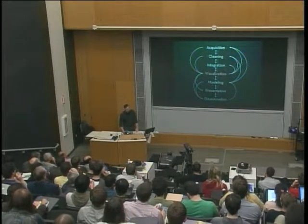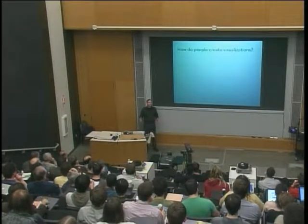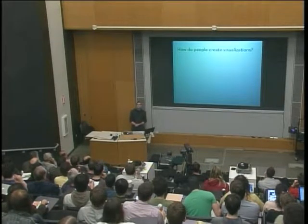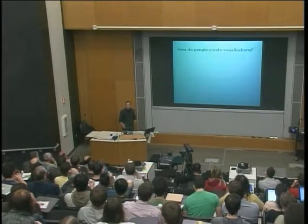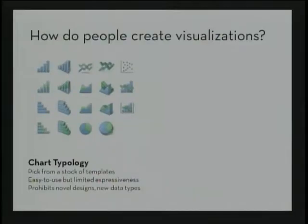Let's start with another question: how do you think people create visualizations today? The single most popular tool is Microsoft Excel or spreadsheet software — the most common way used across the planet. This is an instance of what we call a chart typology, where visual encoding decisions have been made for us and we just slot data in like a template. This has the advantage of being easy to use but has obvious limits in expressiveness and prohibits novel designs.